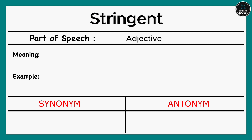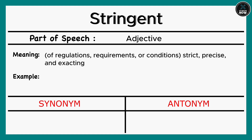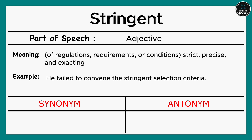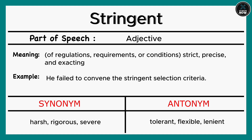Stringent: Of regulations, requirements, or conditions: strict, precise, and exacting. Example: He failed to meet the stringent selection criteria. Synonyms: Harsh, Rigorous, Severe. Antonyms: Tolerant, Flexible, Lenient.